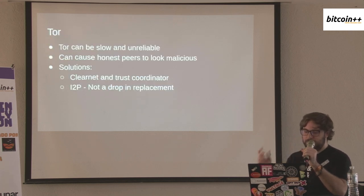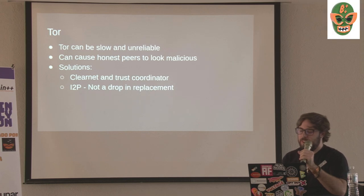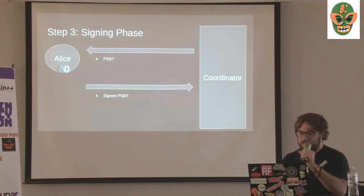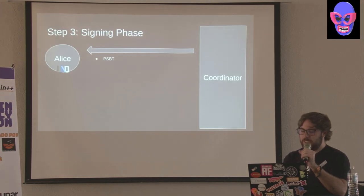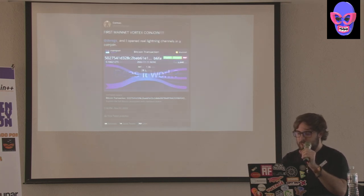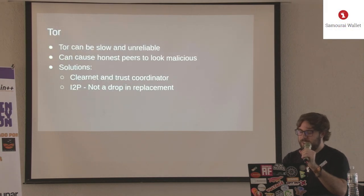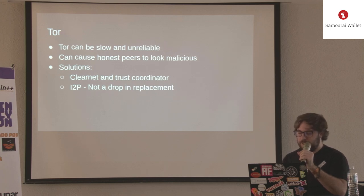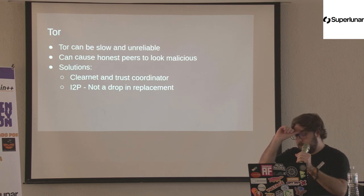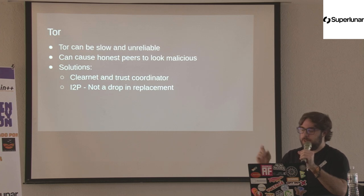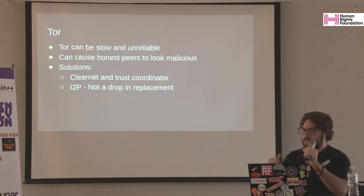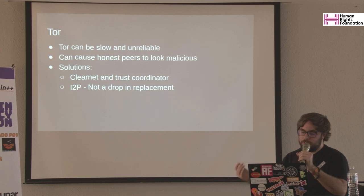The first challenge is Tor — Tor is very slow and unreliable, and the biggest problem is it can cause honest peers to look malicious. For example, Alice needs to sign but her Tor socket got disconnected, so the coordinator thinks she's a bad actor and bans her. You can use clearnet, but then the coordinator could correlate the same IP address registering an input and an output. Another solution could be I2P, though it's not a total drop-in replacement for Tor.